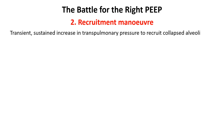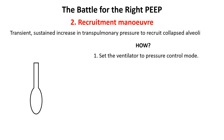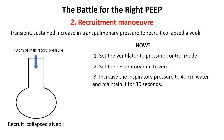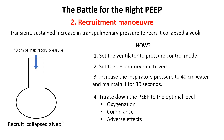A recruitment maneuver causes a transient, sustained increase in transpulmonary pressure designed to open up collapsed, airless alveoli. Several methods have been described, with the sustained pressure method by ARDSnet being the most widely used. In the method described by Arnold et al., a recruitment maneuver involves applying 40 cm H2O of pressure for 30 seconds using pressure-controlled ventilation, with the respiratory rate set to zero to prevent spontaneous breaths. After the maneuver, PEEP is adjusted stepwise — for example, from 25 cm H2O — while monitoring oxygenation, lung compliance, and adverse effects to determine the optimal level that maintains alveolar recruitment safely.